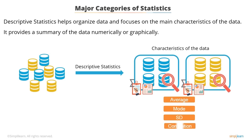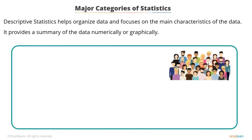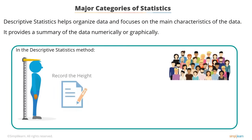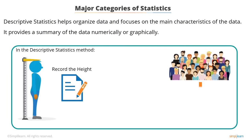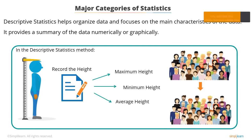Numerical measures such as average, mode, standard deviation, and correlation are used to describe the features of a data set. For example, suppose you want to study the height of students in a classroom. In descriptive statistics, you would record the height of every person in the classroom and then find out the maximum height, minimum height, and average height of the population.